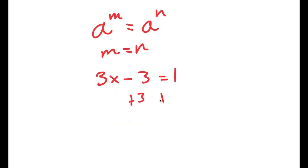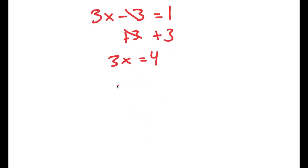Adding 3 to both sides gives 3x equals 4, and therefore x equals 4 over 3.